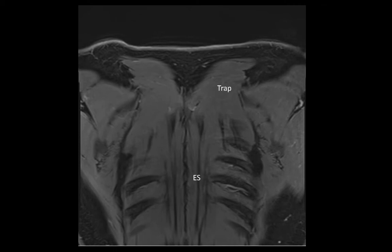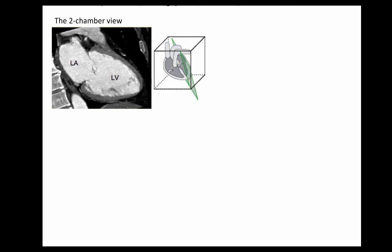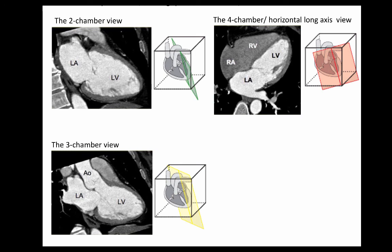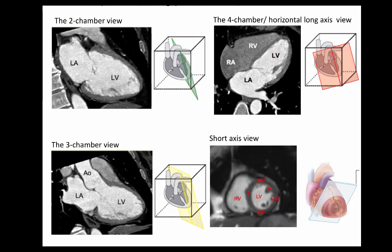One thing to note is that since MRI images can be viewed at any angle, there are some custom angles that we can use to examine the heart. Some examples are: the two chamber view in which we can see the left ventricle and the left atrium; the three chamber view in which we can see the left atrium, left ventricle, and the aorta; the four chamber view, also known as the horizontal long axis view, in which we can see all of the atria and all of the ventricles; and finally the short axis view in which we can see the left and right ventricles.